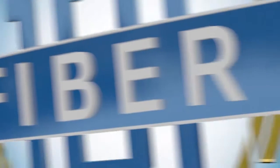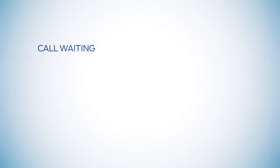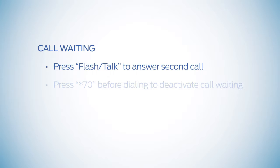Here's how to access some other key FiPhone features. To answer an incoming call while on a call, press the flash talk button. To temporarily deactivate call waiting for a single call, dial star 70 before dialing the number.